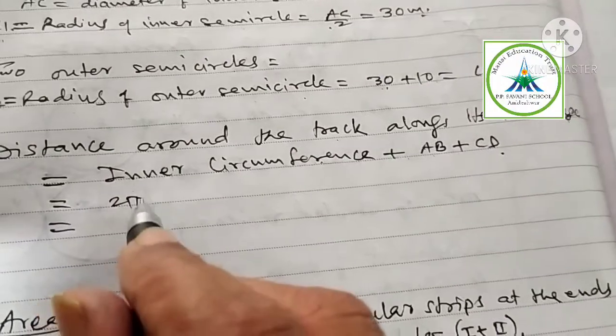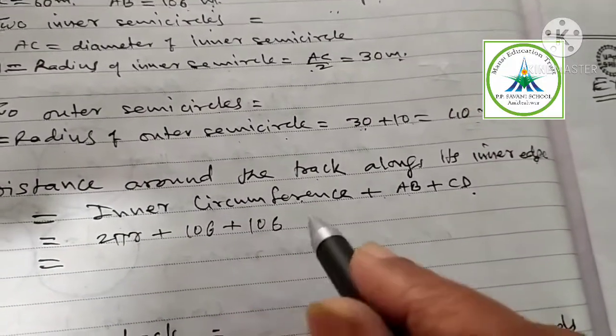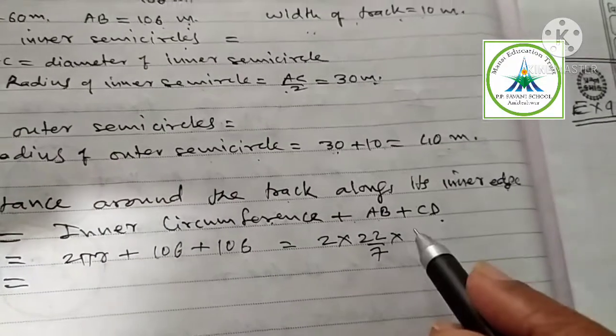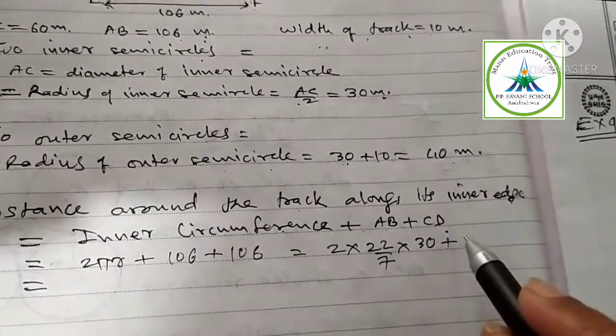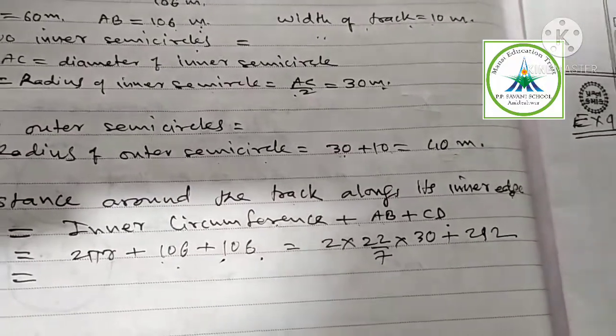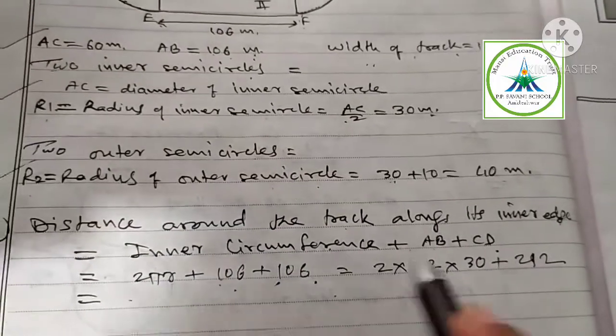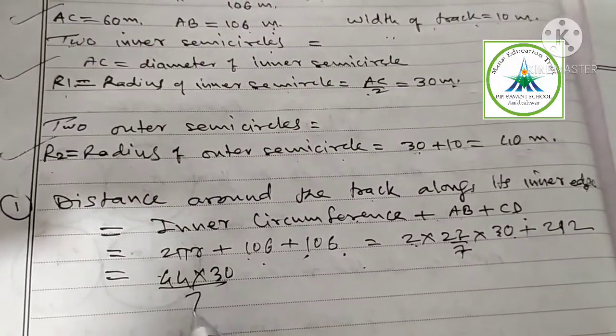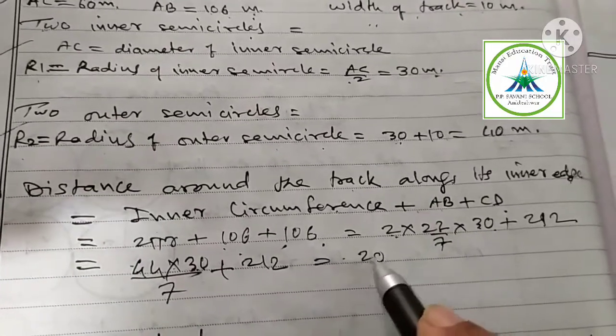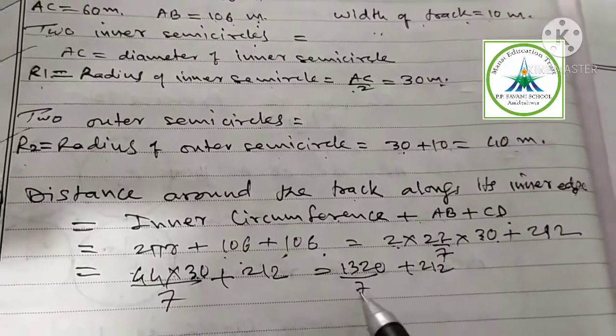Inner circumference formula, you know: 2 pi R. Plus AB is 106, plus CD is 106. Put the value of pi: 2 multiplied by 22 upon 7. Radius of inner semicircle is 30, plus 212. Cancel, we are getting 1320 upon 7 plus 212.